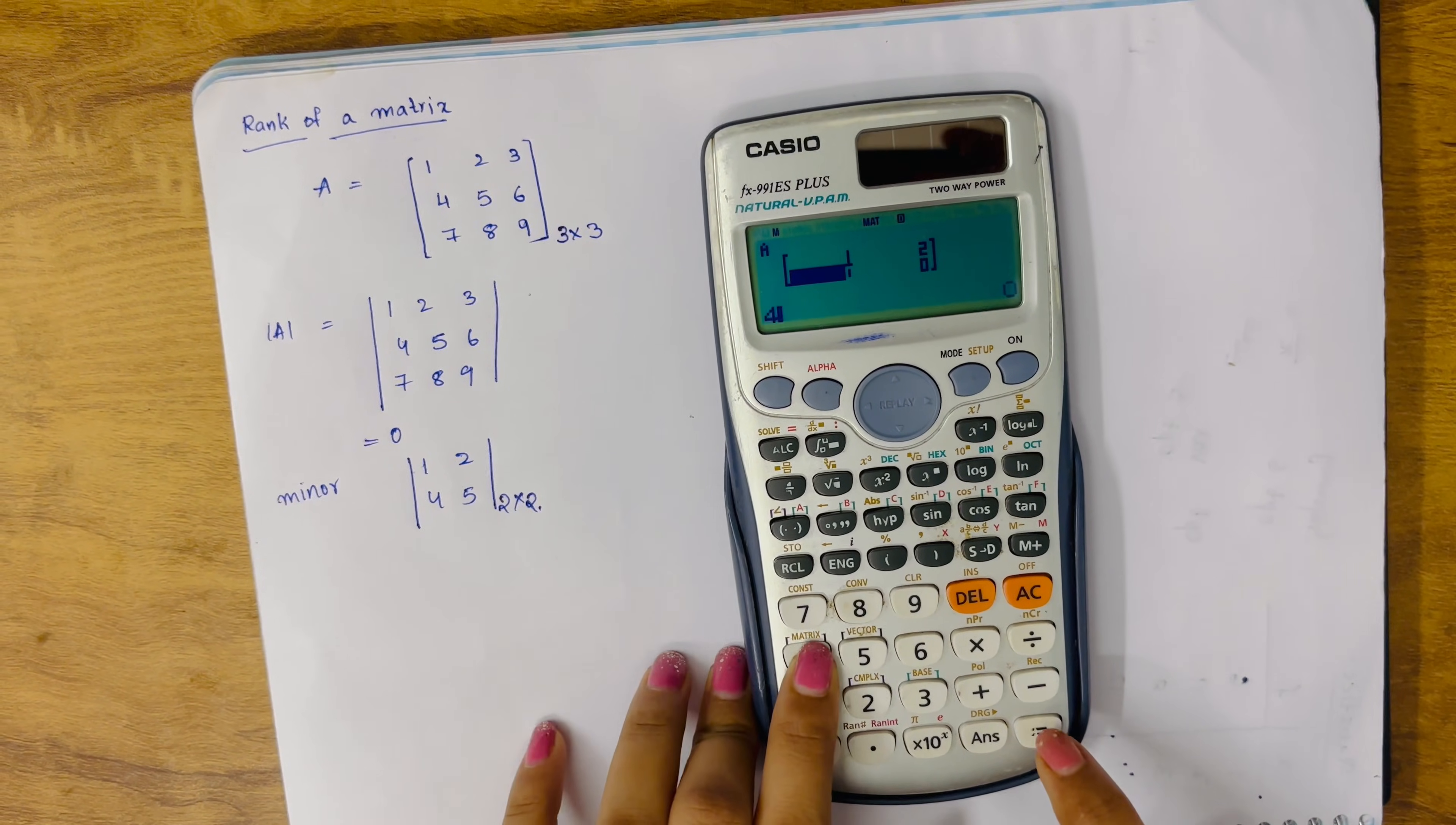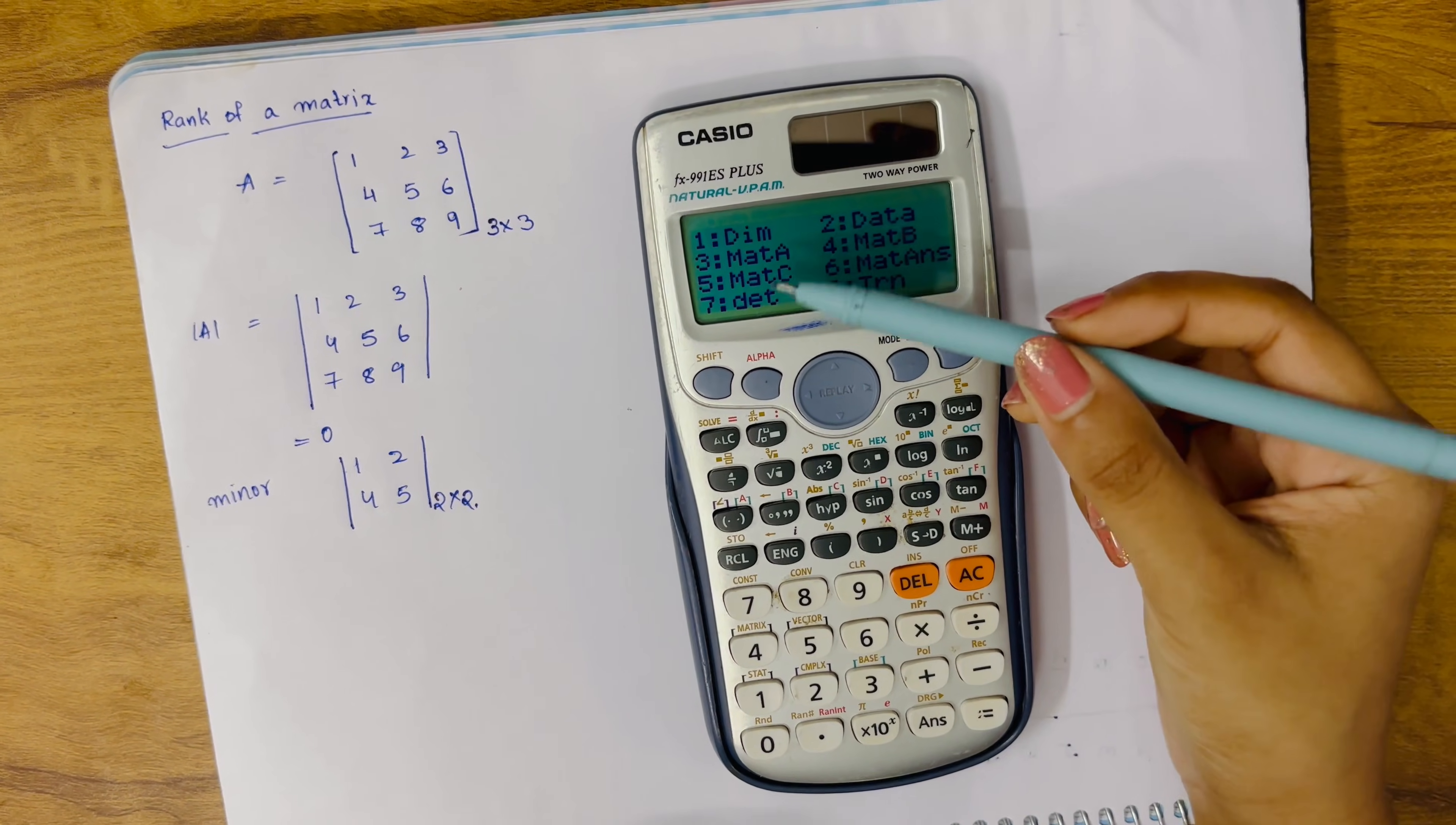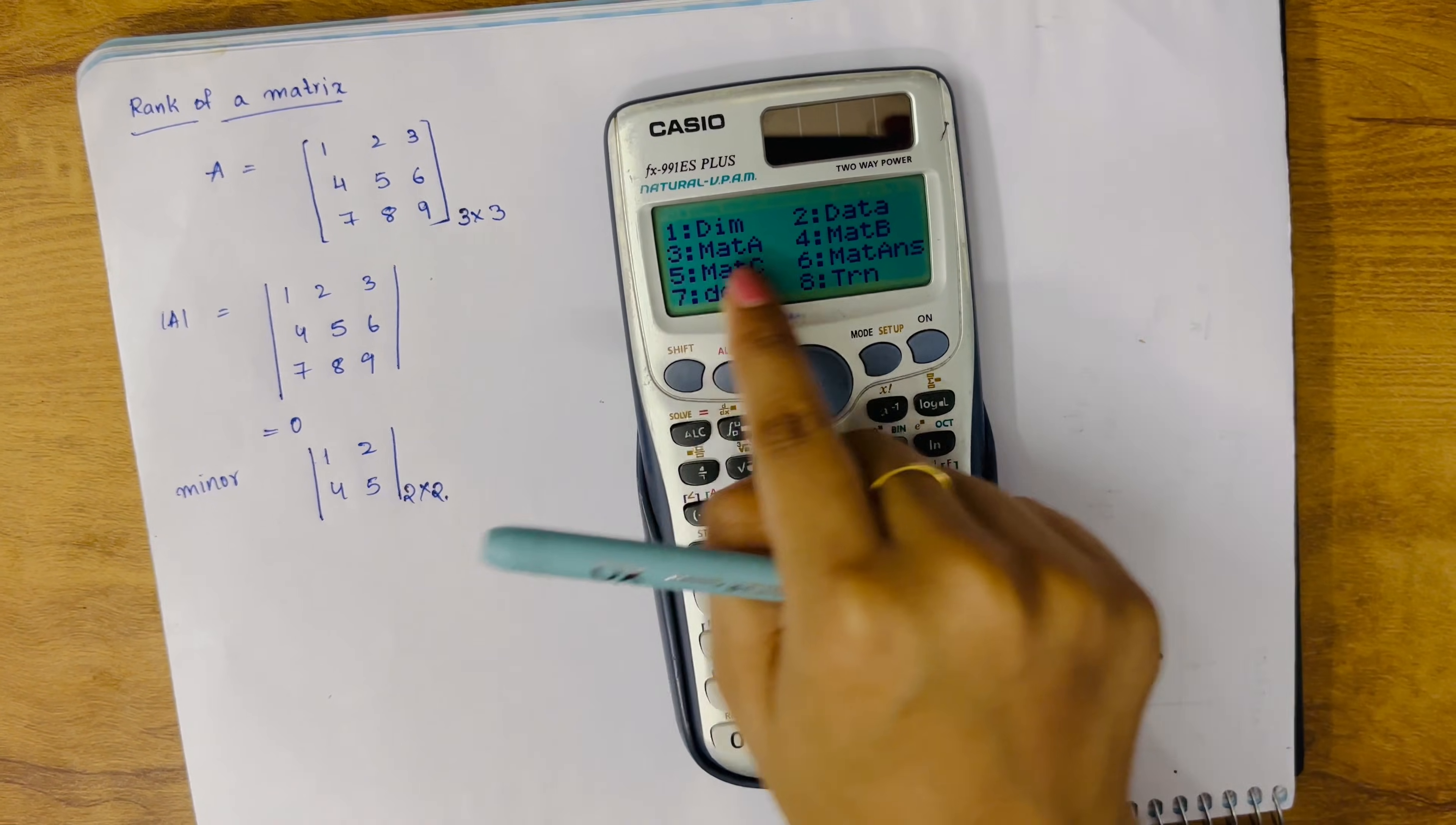Now 1 equals, 2 equals, 4 equals, 5. Saving the value. Click on AC. Now again go to shift matrix 4. We need to find det, so click on option 7. Now we have to find the matrix, that is Mat A. Shift matrix Mat A, that is 3.